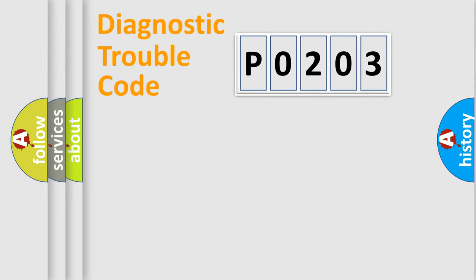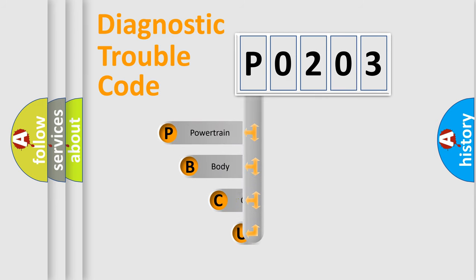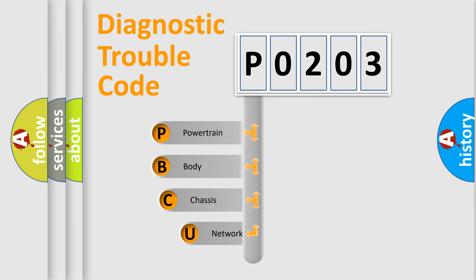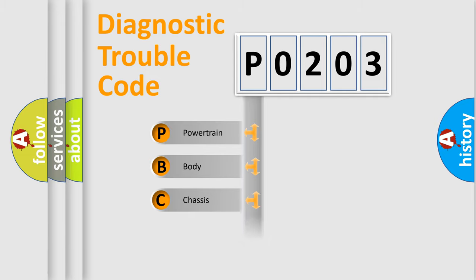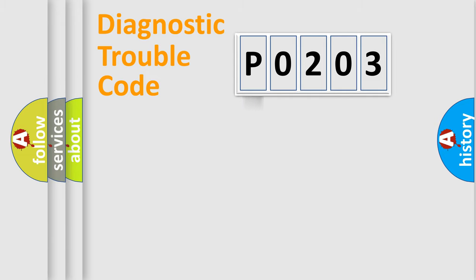Let's do this. First, let's look at the history of diagnostic fault code composition according to the OBD2 protocol, which is unified for all automakers since 2000. We divide the electric system of an automobile into four basic units: Powertrain, Body, Chassis, and Network.